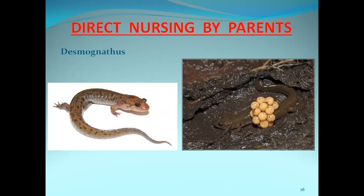The next example is Desmognathus. After laying eggs, Desmognathus converts them into a chain-like structure and wears this chain of eggs around its neck, carrying them along. In this way, a chain of eggs is constructed, directly worn on the neck, and protection is provided for the eggs until they hatch.